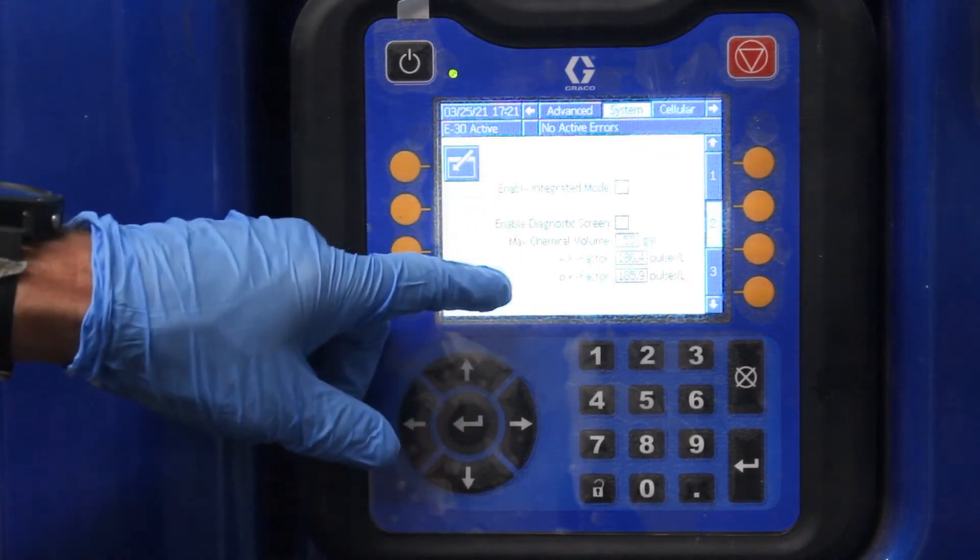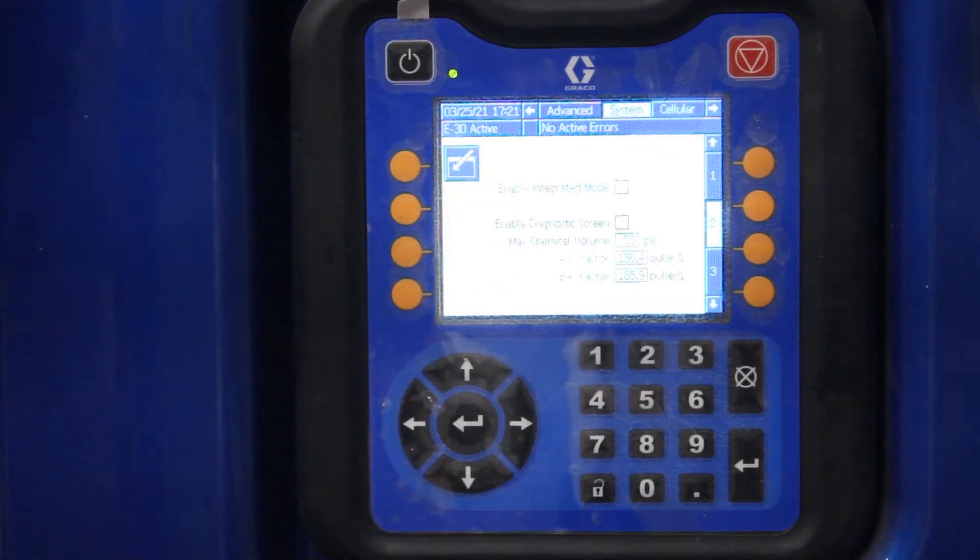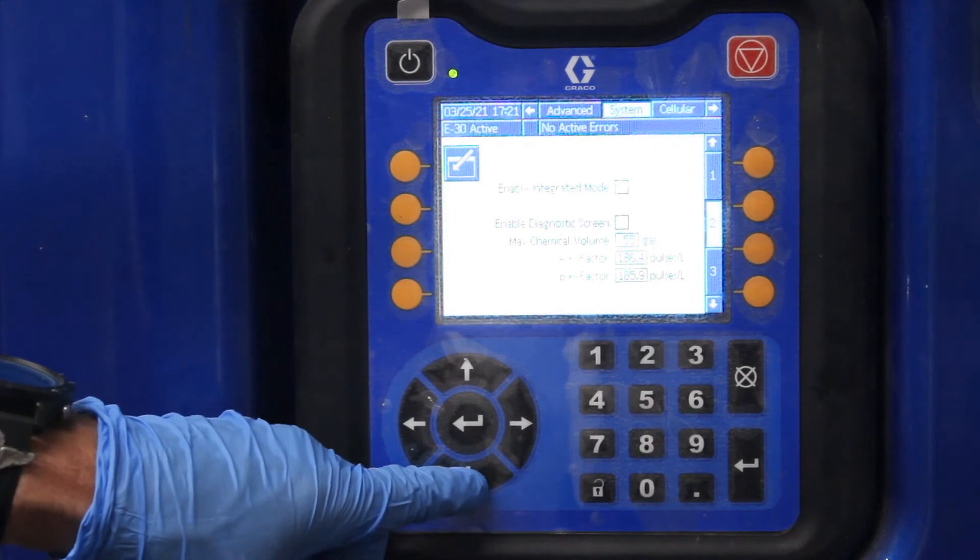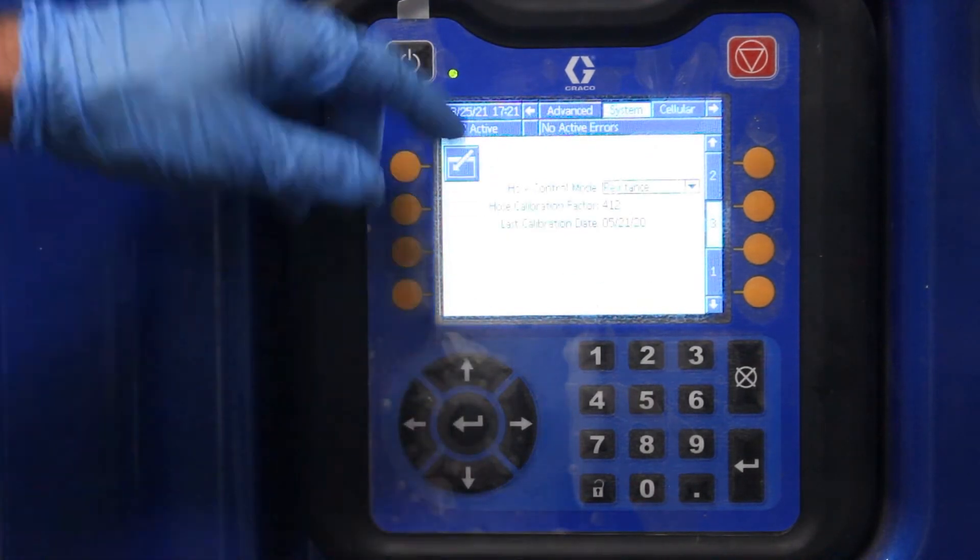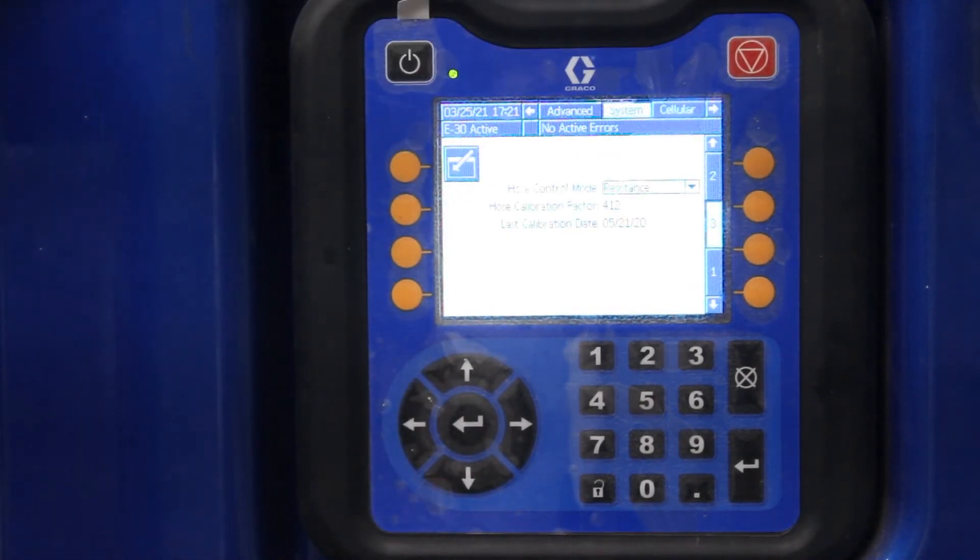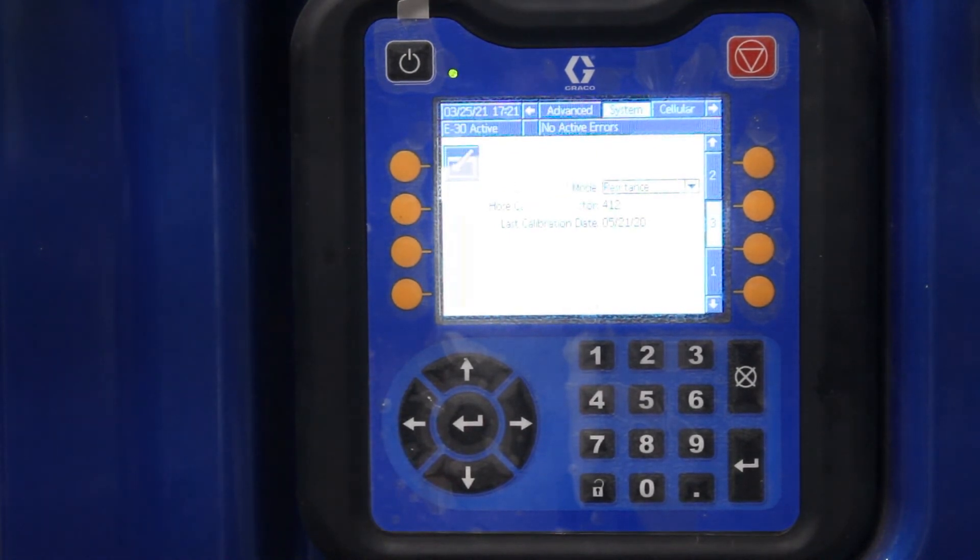Okay. Now we're changing the screen. Integrated mode. If we had insight on this, yes, it would be there. Hose control module mode. This machine has three settings: you got the FTS, you got manual, and you got resistance.